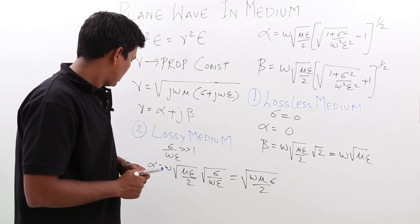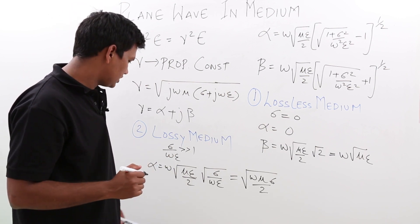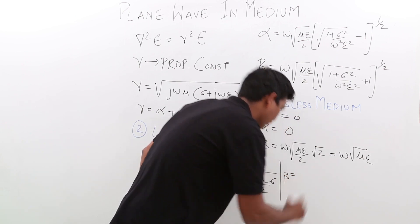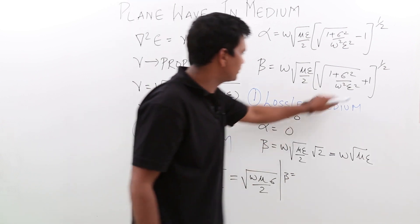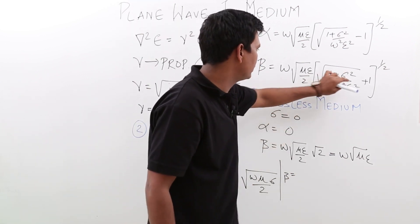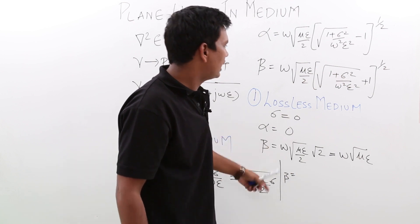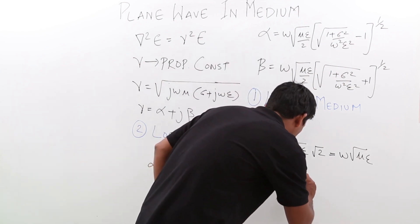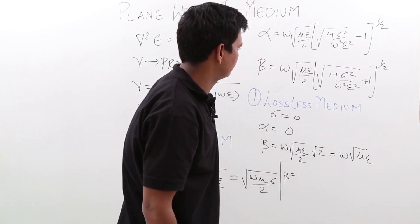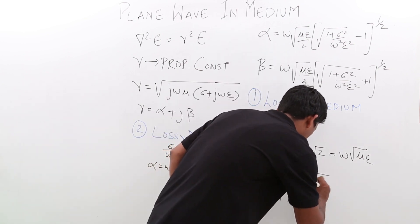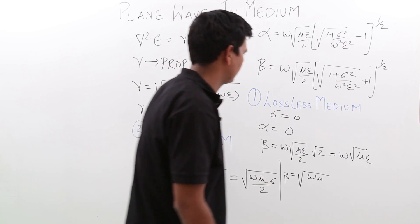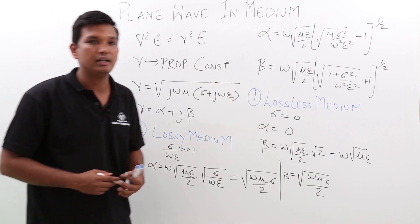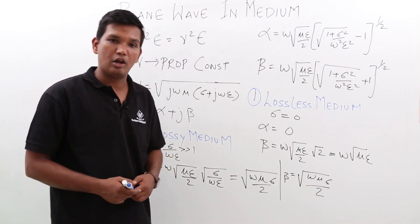What about the phase constant beta for a lossy medium? Again, since the sigma over omega epsilon quantity is very large, I can neglect the 1. Solving this, beta also comes out to be equal to alpha. So we have now concluded alpha and beta for both the lossless medium and the lossy medium.